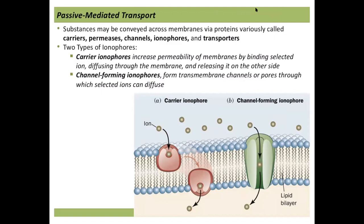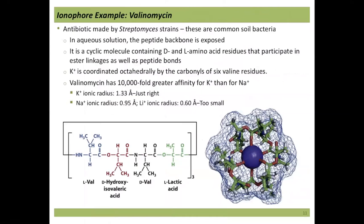Notice the concentration in this example: there are more ions on the outside, and they're moving into the cell where concentration is lower — down their concentration gradient. Let's look at a specific example: valinomycin, made by Streptomyces, which are common soil bacteria. It's a cyclic peptide with a repeating unit that includes D-amino acids and ester linkages — a well-studied ionophore.